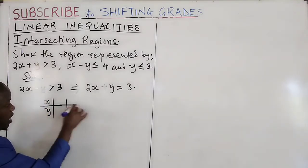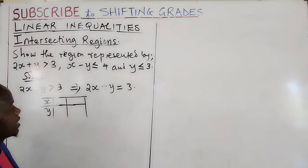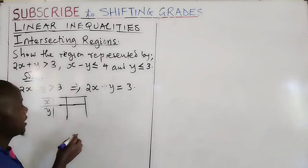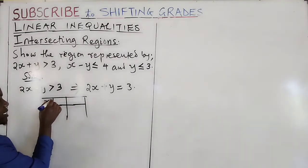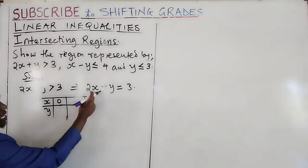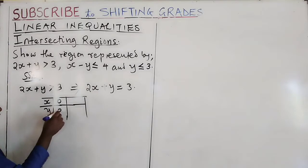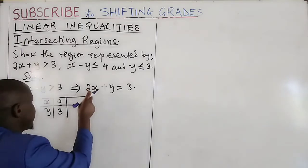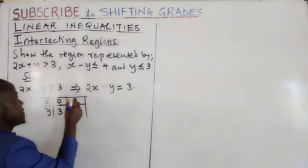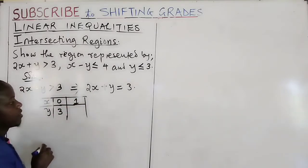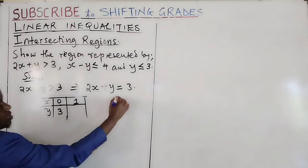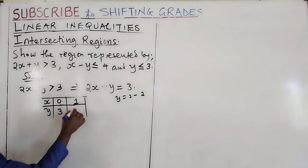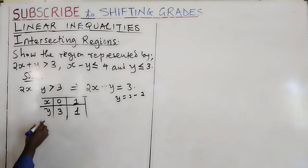We calculate a few coordinates. We can start with x equal to 0: replacing x in the equation, we get y equal to 3, giving coordinate (0, 3). When x is 1, then y equals 3 minus 2 times 1, which is 1, giving coordinate (1, 1). Two coordinates are enough to draw the line.